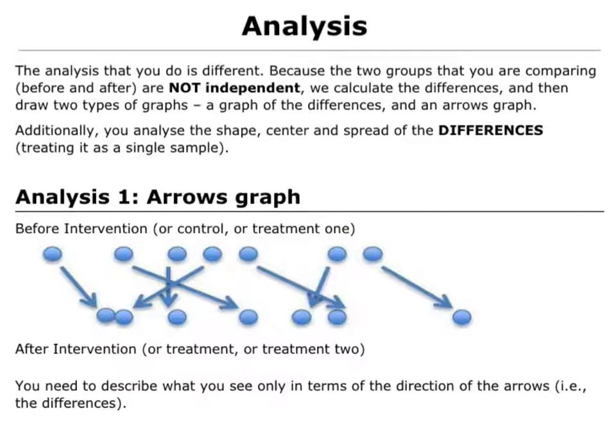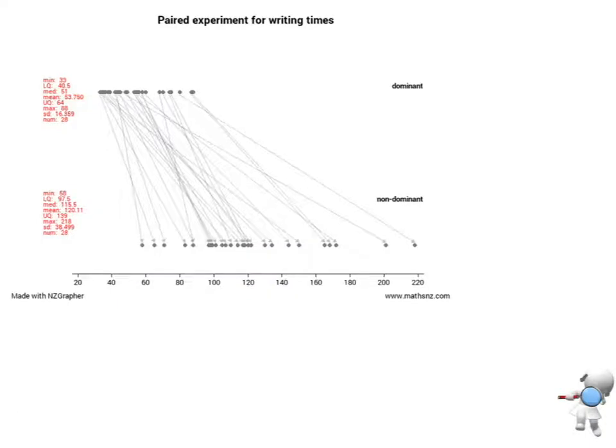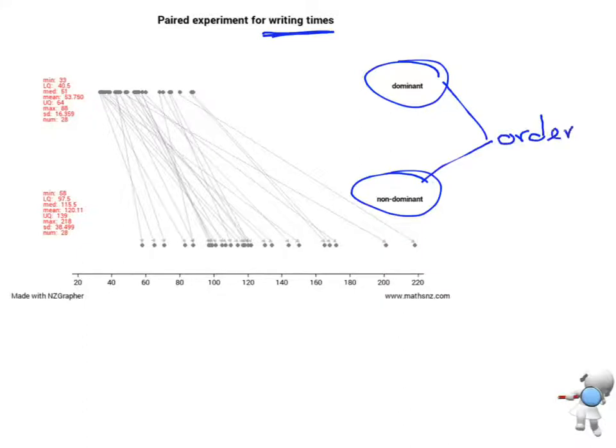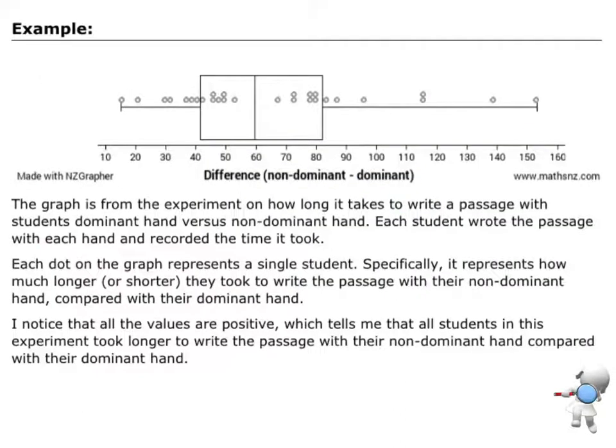So, analysis. I'm going to start by thinking, in year 12, we have this idea about arrows graphs, which is trying to show you the difference. It's trying to give you that graphical way to see the differences. So, here's an example of it. And this is looking at an experiment where we've looked at writing times, and students got to write with their dominant hand and their non-dominant hand. And we randomly allocated the order. So, some students did their dominant hand first, and then their non-dominant hand second. And others did it their non-dominant first and dominant second. And so, what we've got is, at the top here, I've got my dominant hand times. And each arrow refers to the difference between the time they took to do the test with their dominant versus their non-dominant hand. So, each arrow represents the difference in one person's time.